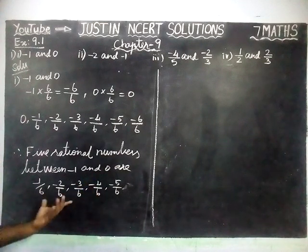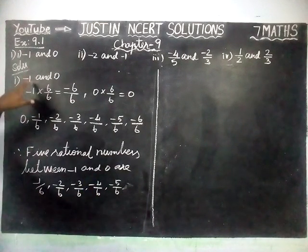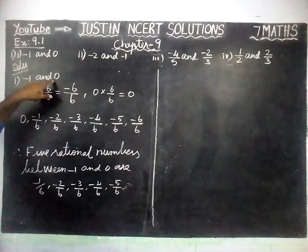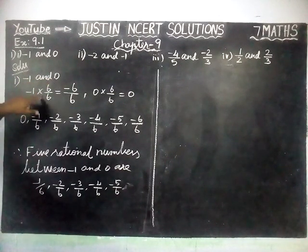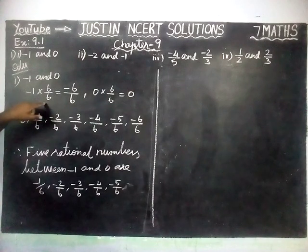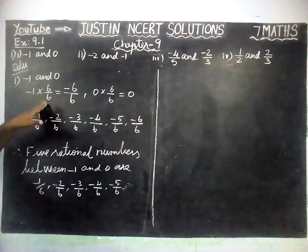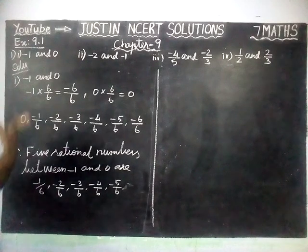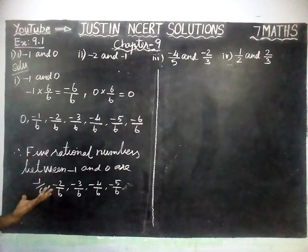And this is not only the answer. In between 2 rational numbers, unlimited rational numbers are there — we can find them. For example, instead of multiplying minus 1 by 6/6, you can use 7/7 or 100/100. Whichever number you want, you can take and write any 5 numbers.